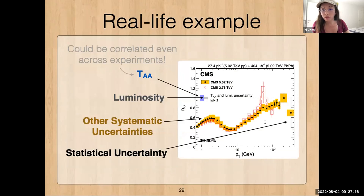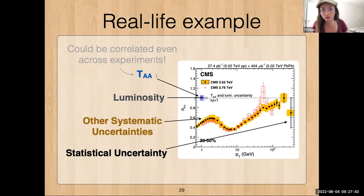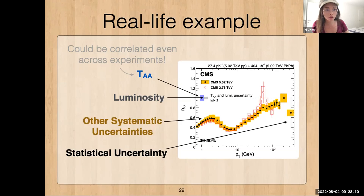As a real-life example from CMS, this is the hadron RAA. There are different components: a totally correlated uncertainty from the T_AA nuclear overlap and also luminosity uncertainty. The T_AA uncertainty could even be correlated across experiments if they use the same calculation. Beyond that, for each point there's a box for systematic uncertainties and a line for statistical uncertainty. In heavy-ion results, this is usually how things are broken down: an overall correlated piece, then statistical uncertainty, and then the rest.